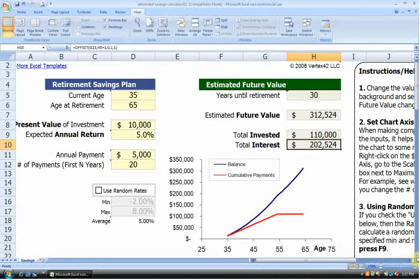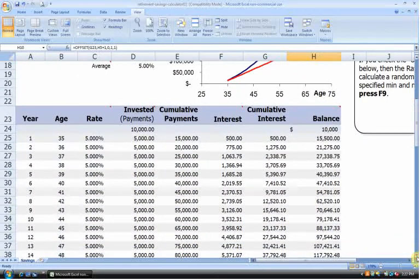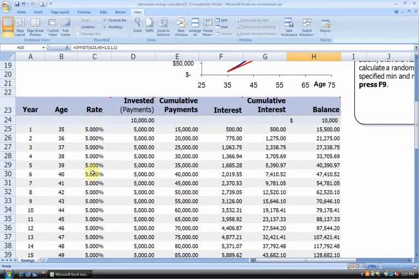So let's scroll down a little more. And you can see that we actually have a whole table here showing a year-by-year schedule of the savings plan. So in column A, we have the year number.